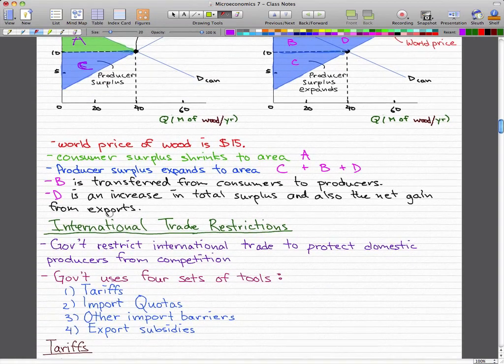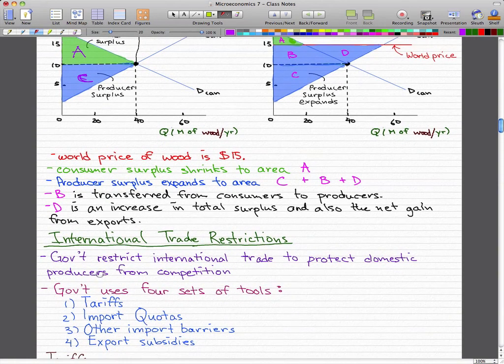And let's just start off with international trade restrictions. So governments restrict international trade to protect domestic producers from competition. And they actually use four sets of tools: tariffs, import quotas and some other import barriers and export subsidies.